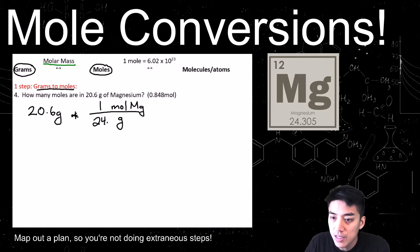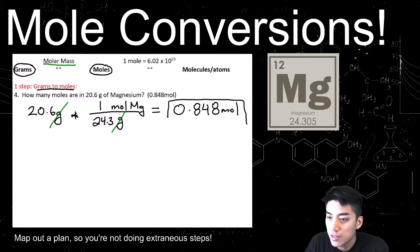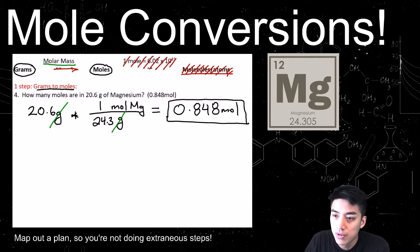Without the E. Now put down 1 mole equals 24.3 grams of magnesium — that's the molar mass — so the grams cancel out. It's 20.6 divided by 24.3, which gives you 0.848 moles. I didn't have to use the conversion factors on the far right of the chart because I'm not being asked to solve for atoms of magnesium. The problem simply wants grams to moles.